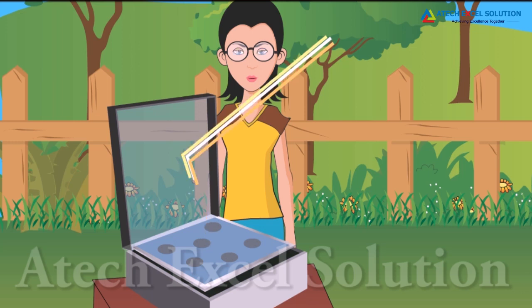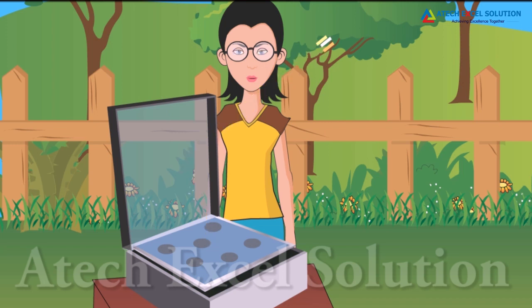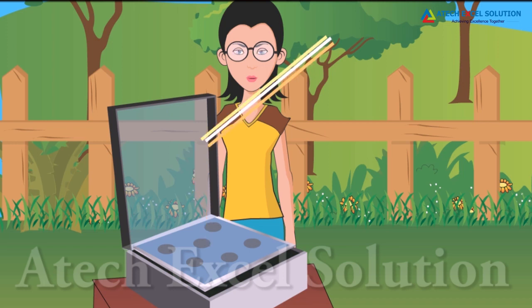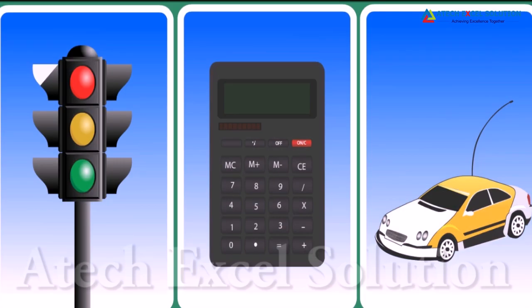The direct rays of sun are not enough to heat the food. The solar energy is concentrated in one place to heat the food. Traffic signals, calculators and toys are some devices that use solar cells.